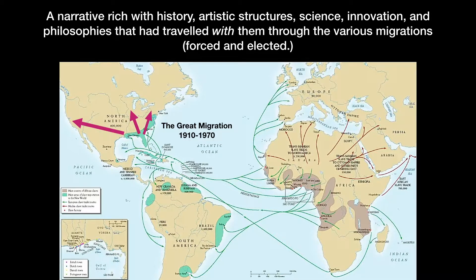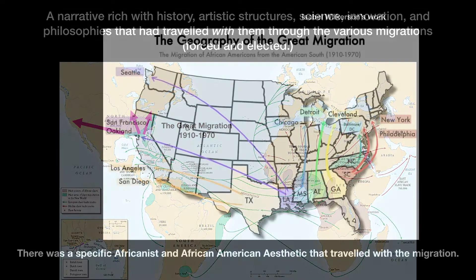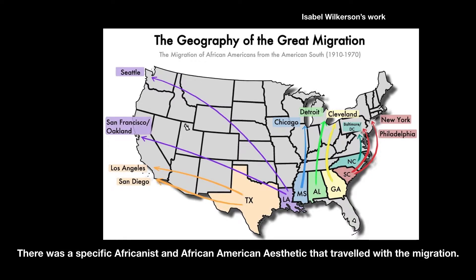One of the most significant elected migrations of African Americans is now known as the Great Migration. Because of the prevalence of racist conditions in the South well after the emancipation of 1865 and the Reconstruction Era, which ended in 1877, many African Americans left the southeastern part of the United States. According to Isabel Wilkerson, there was a steady migration totaling over 6 million Blacks, who moved both north and westward between 1910 and 1970, creating a dispersion of Southern Black, Caribbean, and African influences.